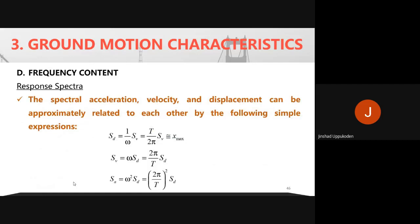Sd (spectral displacement) is approximately equal to the maximum displacement. Sv (spectral velocity) equals ω·Sd = (2π/T)·Sd, and Sa (spectral acceleration) equals ω²·Sd = (2π/T)²·Sd. All three — Sd, Sv, and Sa — are interrelated to each other.